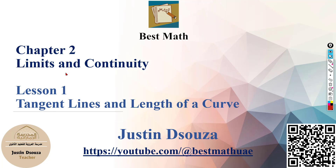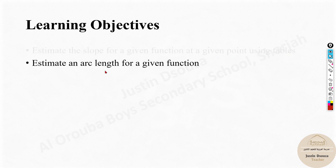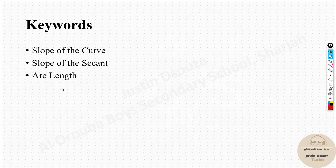You might find this lesson a bit unique, but as we go on with more lessons and more problems you will get a hang of it. I won't go into lots of details; I will try to stick to the point and mainly solve example problems and explain how to solve them based on the textbook. The lesson objectives are to estimate the slope for a given function at a given point using tables, and to estimate an arc length for a given function. The keywords are: slope of a curve, slope of secant, and arc length.